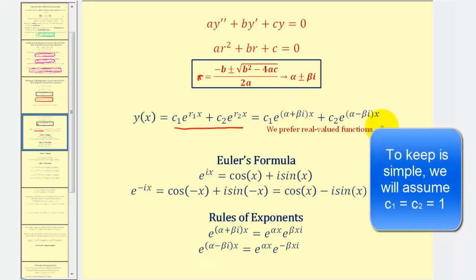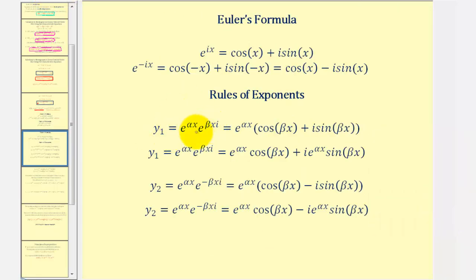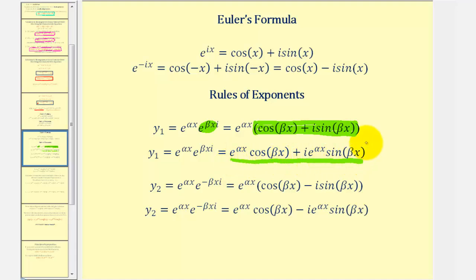Now we're going to apply Euler's formula to the second factor of y sub one and y sub two, which make up the sum of our general solution. Looking at y sub one, we have e raised to the power of beta xi, which when applying Euler's formula gives us the sum here, and then distributing gives us this sum. For y sub two, we apply the variation of Euler's formula to the second factor, giving us this difference, and then distributing, giving us this.